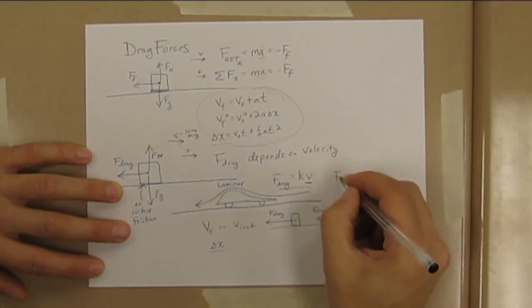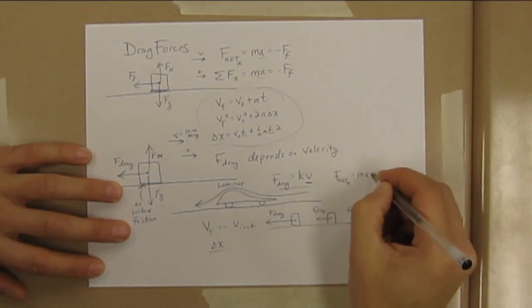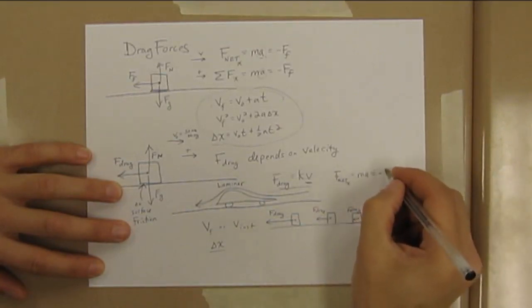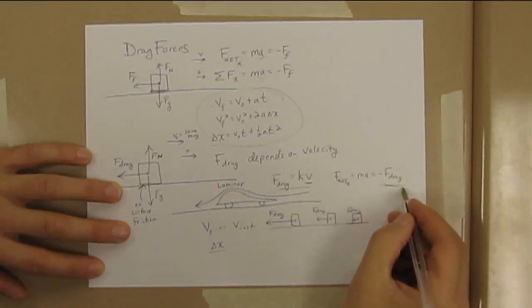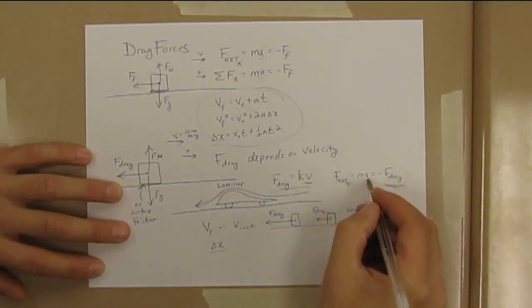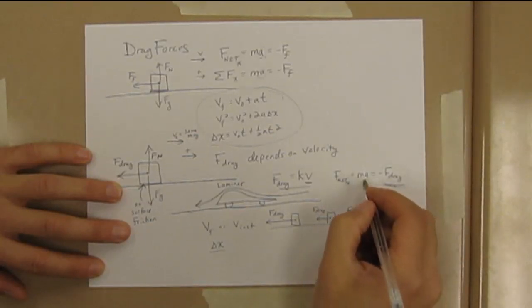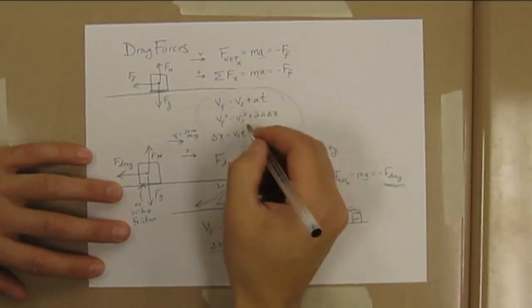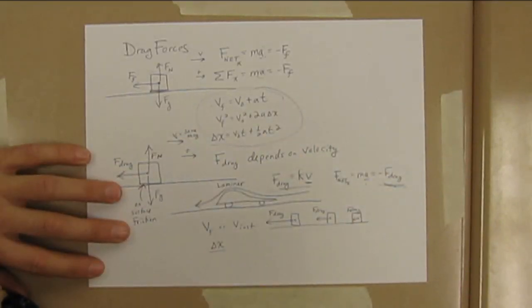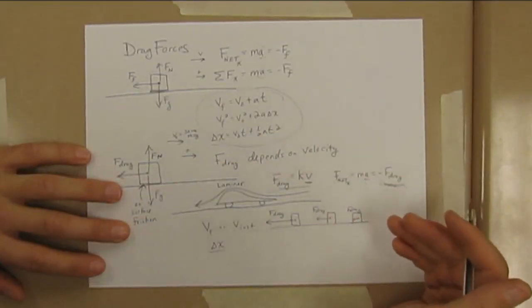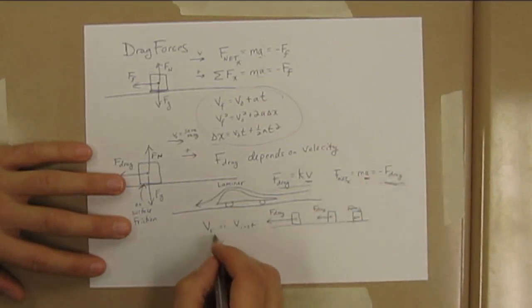So the force that's actually doing the acceleration is itself changing. If we looked at our Newton's law equation, we would write F_net in the x direction equals ma, and that would be equal to minus F_drag. So that is our net force right there. Our net force is making this accelerate, and since that's changing, the acceleration is changing. If the acceleration is changing, we can't use these formulas because these all depend on constant acceleration.